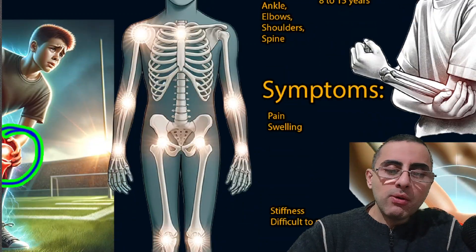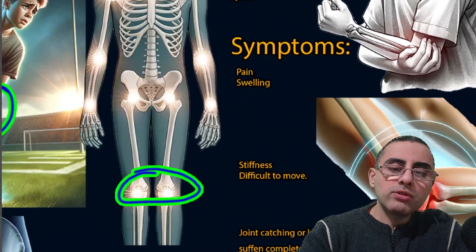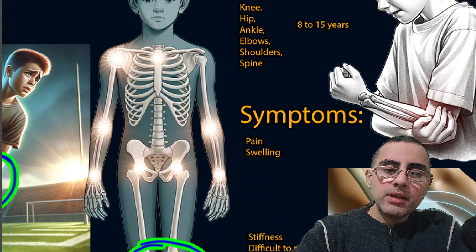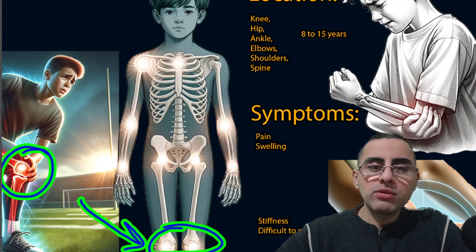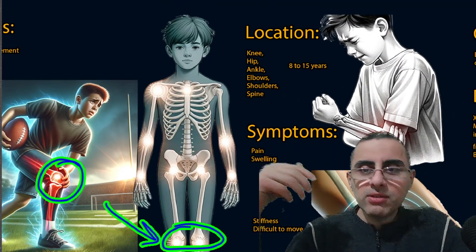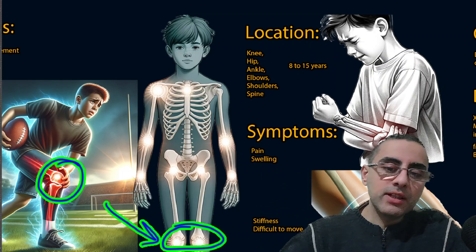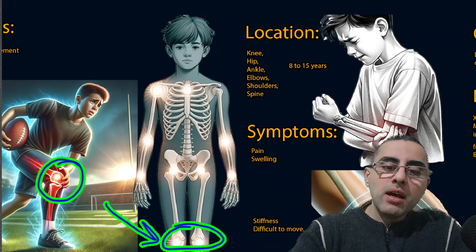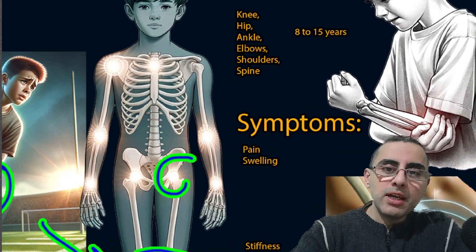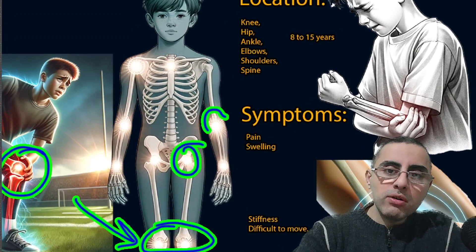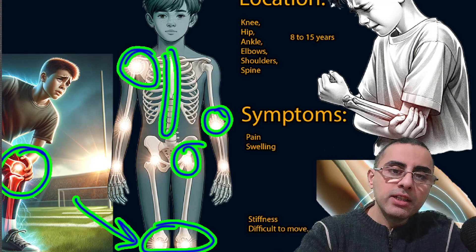The most common location of osteochondrosis is the knee joint, and it is called Osgood-Schlatter disease. Osteochondrosis of the knee usually affects both joints, and in many cases it affects multiple joints — it is bilateral. However, it can affect single joints as well. Other locations include the hip, ankle, elbows, shoulders, and sometimes the spine.